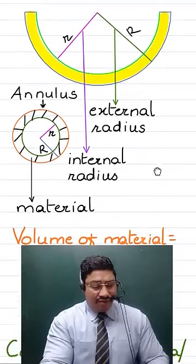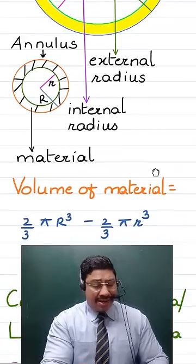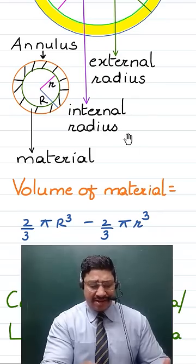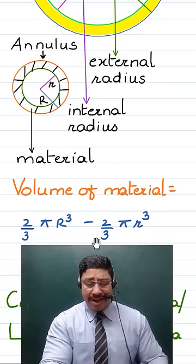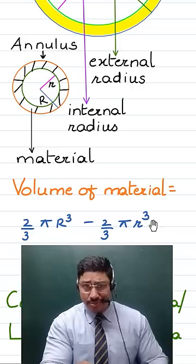Now if you require to find out the volume of the material which has made this hemispherical shell, then that is 2 upon 3 pi times of capital R cube minus 2 upon 3 pi times of small r cube.